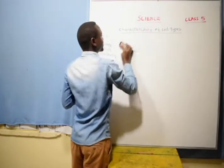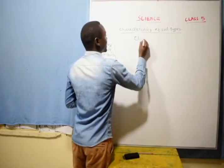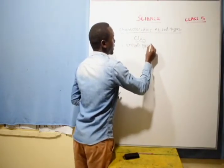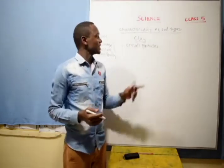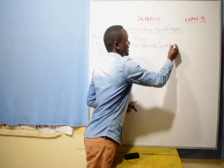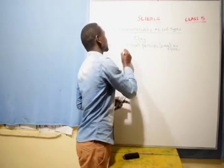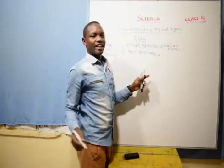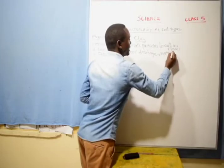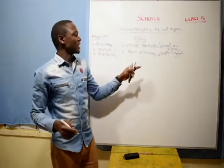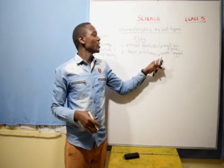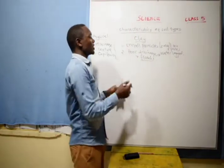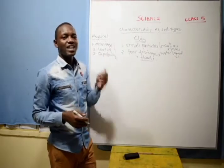Now let's look at clay soil. Clay soil has small particles. If it has small particles, it has small air spaces. If it has small air spaces, it means it has poor drainage, and it becomes easily waterlogged. Waterlogged means that it does not allow water to pass through, so it is likely to cause floods because it does not allow water to seep or drain into the soil. So its water-holding capacity is very high.